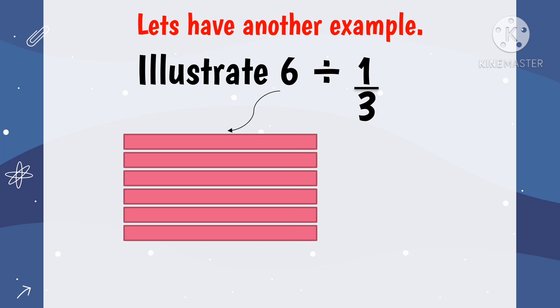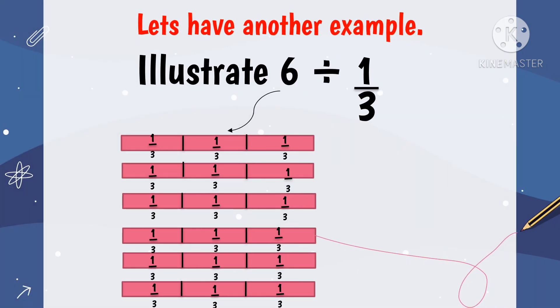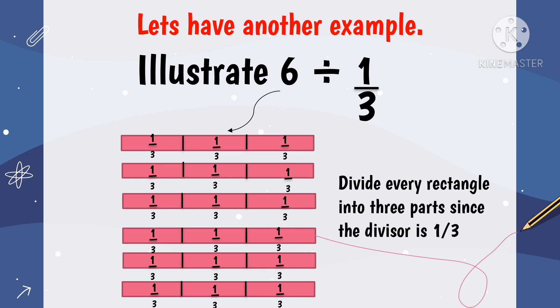So, we now have 6 rectangles. Then, we will divide every rectangle into 3 parts since the divisor is 1 third. So, we'll divide the rectangles into 3 parts.